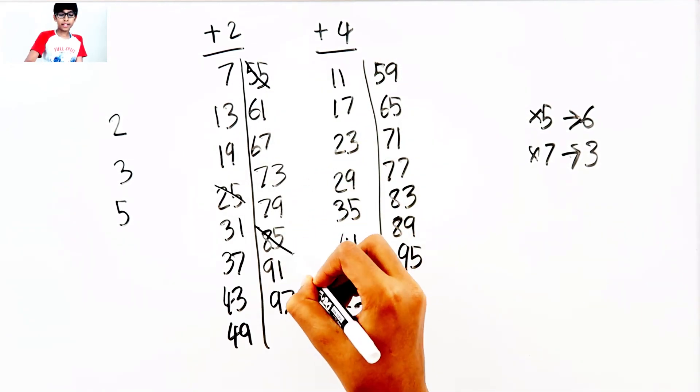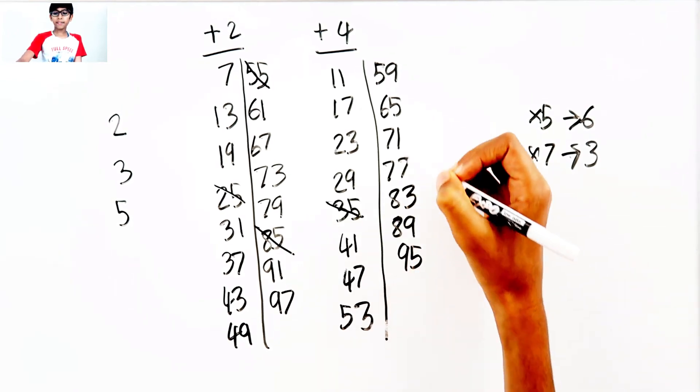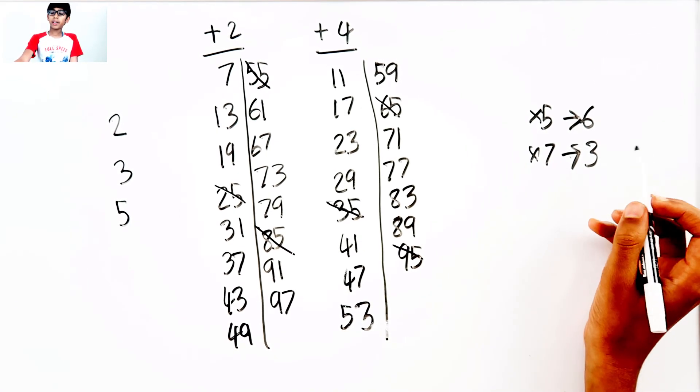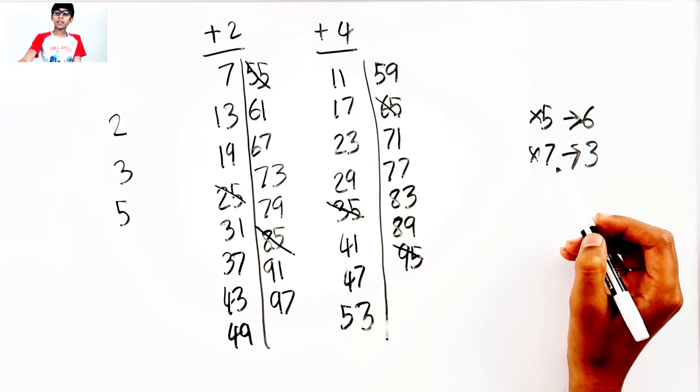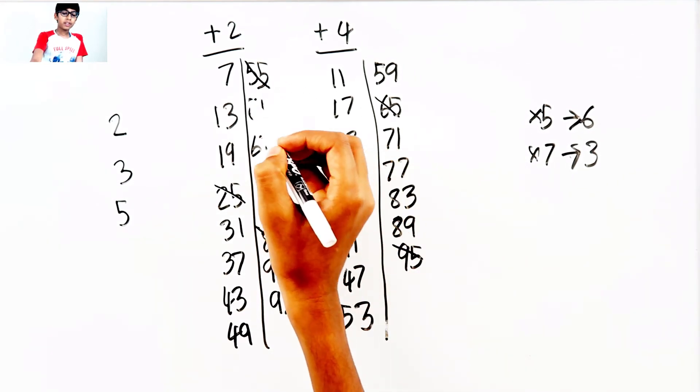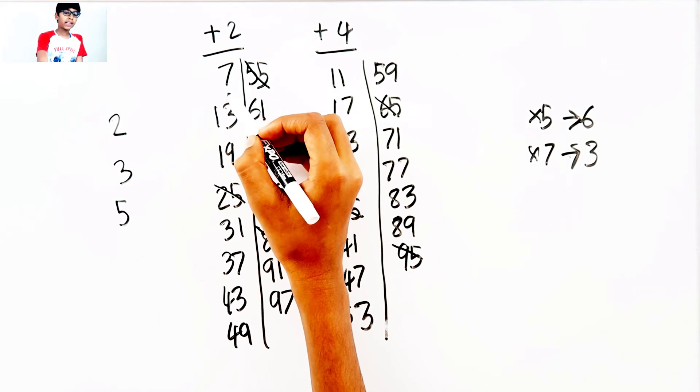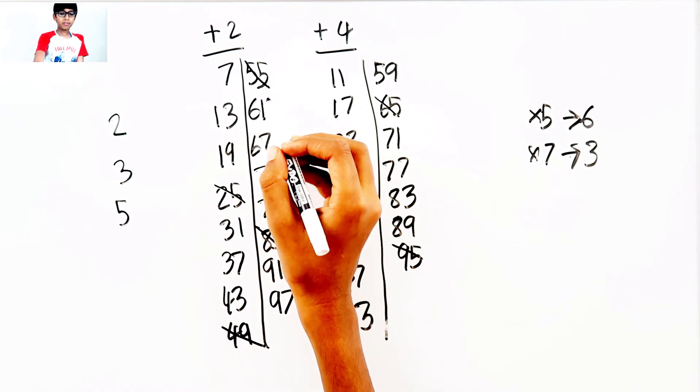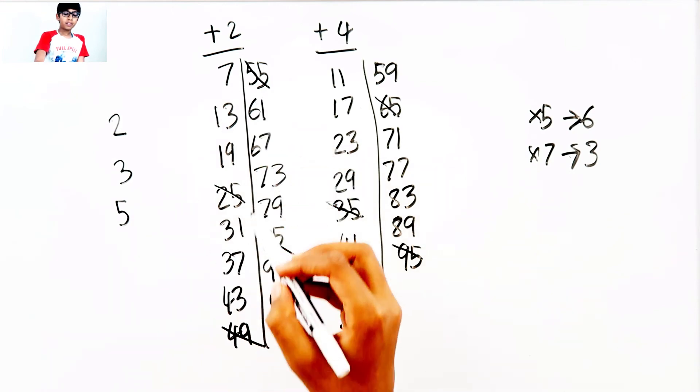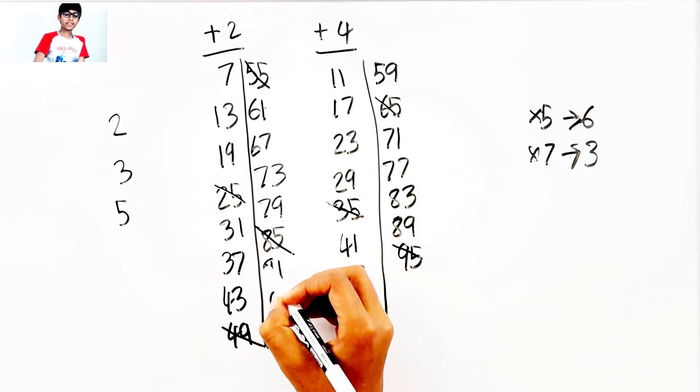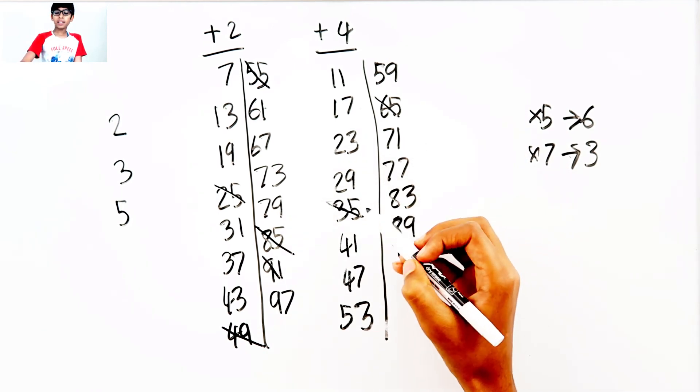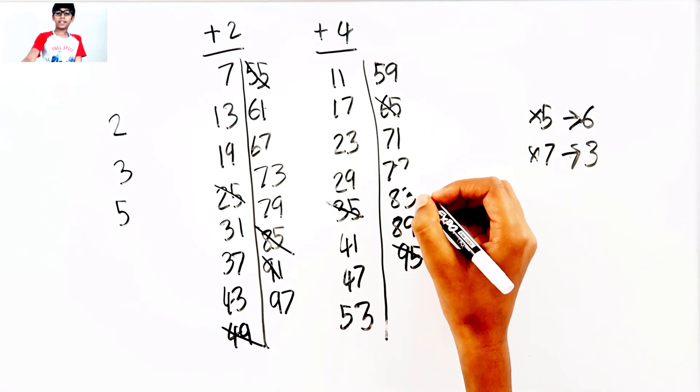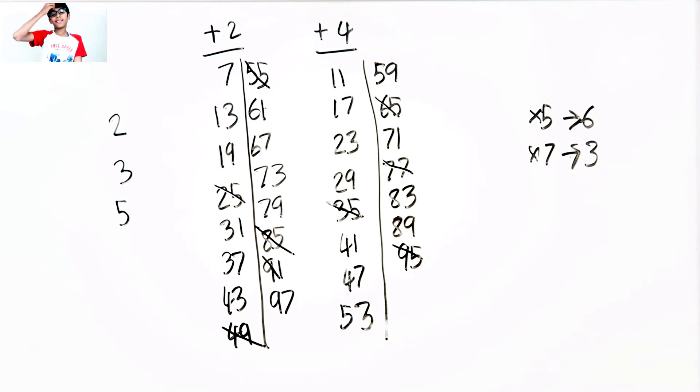Next we need to find three numbers that can be divided by 7. There's an easy way to do that. I need to count from 7: 1, 2, 3, 4, 5, 6, 7, then I cross out 49. 1, 2, 3, 4, 5, 6, 7, 91. In this line I need to start from 35: 1, 2, 3, 4, 5, 6, 7. And that's it.